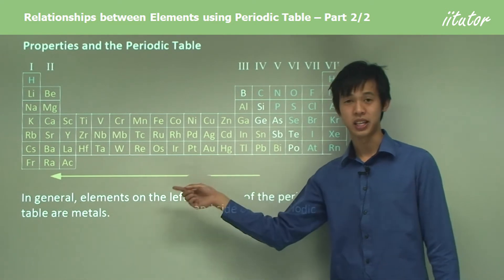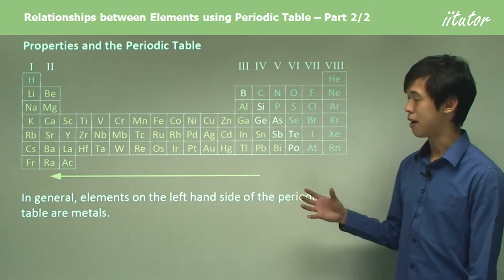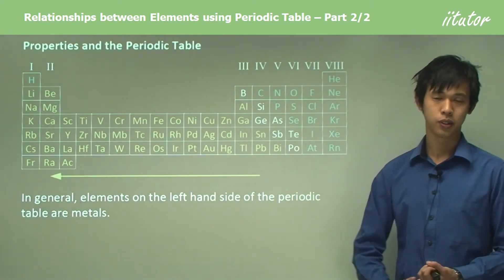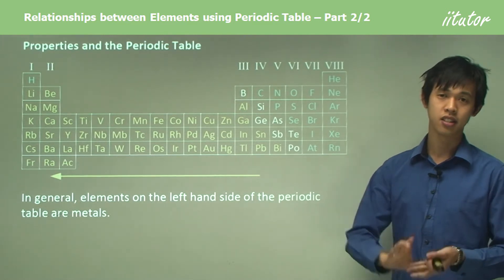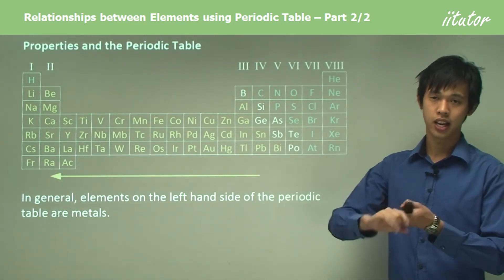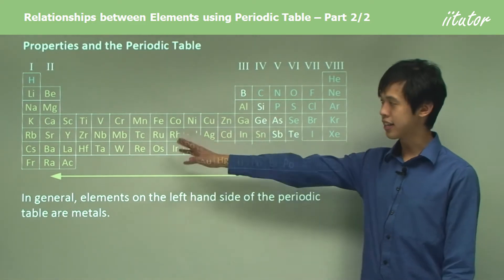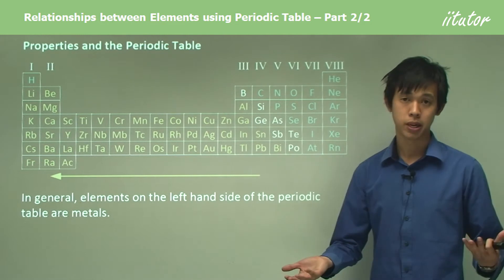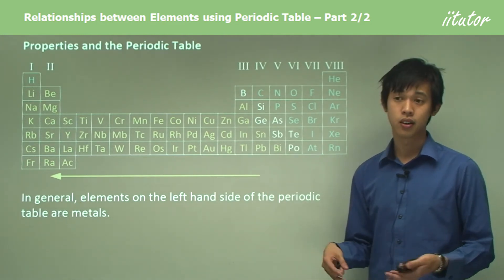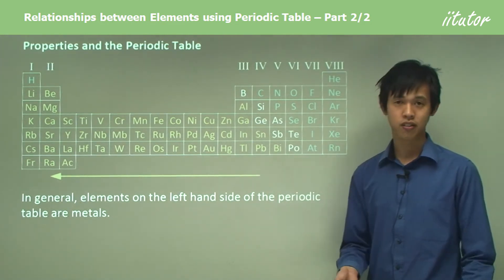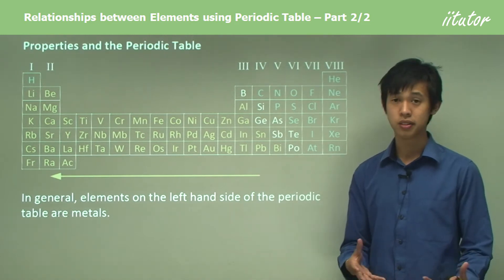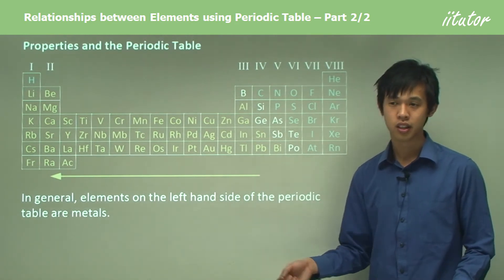In general, elements on the left-hand side, the way the yellow arrow is pointing, are metals. They're solid at room temperature, great electrical conductors, great thermal conductors, and are malleable and ductile. All of those things we talked about in previous lessons. On the left-hand side we're likely to find metals.